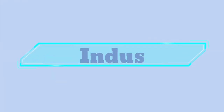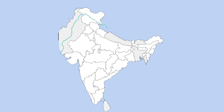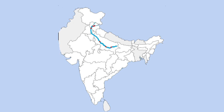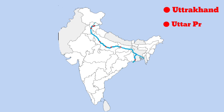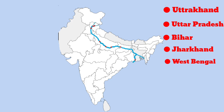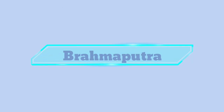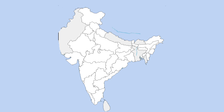Indus: it flows through the union territory of Ladakh, and the name India is derived from this river. Ganga: it passes through the states of Uttarakhand, Uttar Pradesh, Bihar, Jharkhand, and West Bengal. It is the most sacred river of India and the longest and most important river for the people for their agriculture.